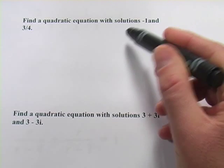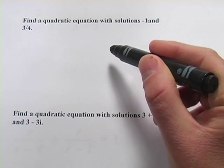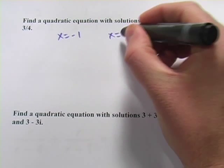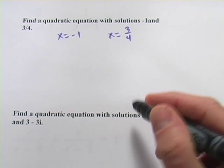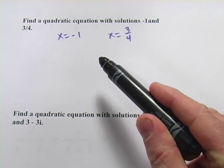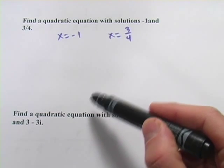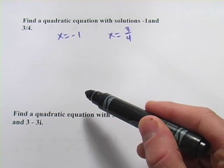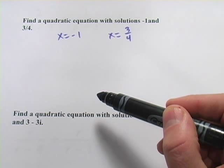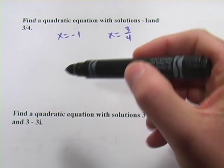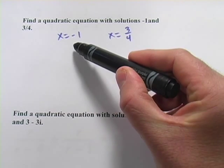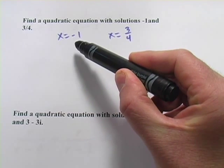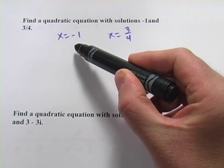In this first problem, it says that the solutions are negative 1 and 3 fourths. What that means is x equals negative 1 and x equals 3 fourths. Now, you might remember that with a quadratic equation, we set it to 0, then we factor it, if it factors, if we're lucky. And those factors are each set to 0, and then you solve those factors for x after they're set to 0. So we want to go backwards here. We want to get these set to 0, and then we'll have the factors.